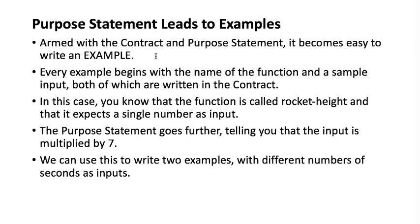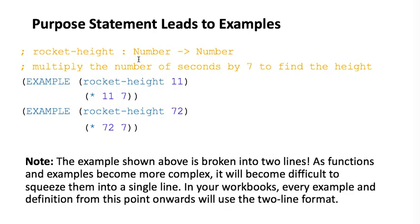The purpose statement leads to examples. Armed with the contract and purpose statement, it becomes easy to write our examples. Every example begins with the name of the function and a sample input, both written in the contract. The contract leads right into the examples — you know the function is called rocket-height and it expects a single number as input. The purpose statement goes further, telling you that the input is multiplied by seven, so we can write two examples with different numbers of seconds as inputs.